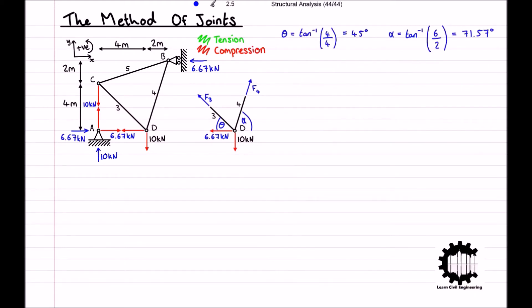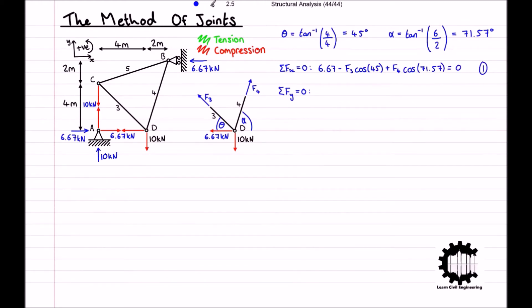Applying the conditions of equilibrium at node D, the sum of all horizontal forces — taking x positive — is 6.67 minus F3 times cosine 45 plus F4 times cosine 71.57, equals zero. For the sum of all vertical forces — taking y positive — we have negative 10 plus F3 times sine 45 plus F4 times sine 71.57, equals zero. This gives us a set of simultaneous equations to solve for the two unknowns.